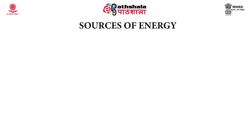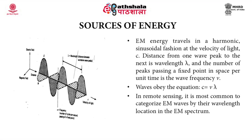The first and foremost requirement is a source of energy. Electromagnetic energy is generally used for remote sensing studies of earth's surface features. This electromagnetic energy travels in a harmonic sinusoidal fashion at the velocity of light, that is 3×10⁸ meters per second. The distance from one wave peak to the next is known as wavelength, and the number of peaks passing through a fixed point in space per unit time is called the wave frequency. These electromagnetic radiations obey the wave equation c = νλ. In remote sensing, it is common to categorize electromagnetic energy waves by their wavelength location in the electromagnetic spectrum.